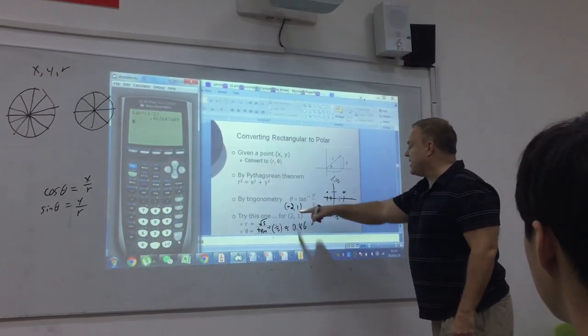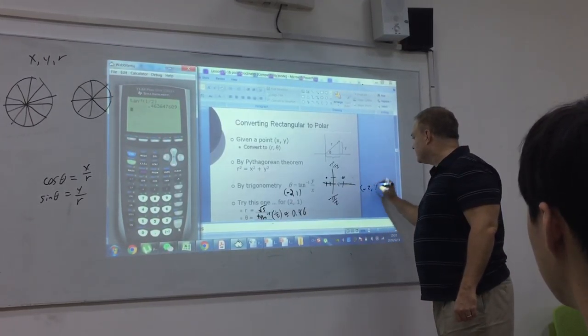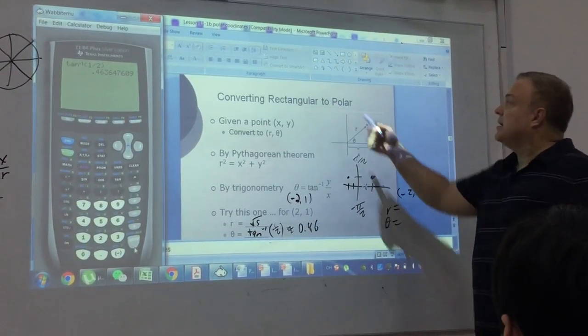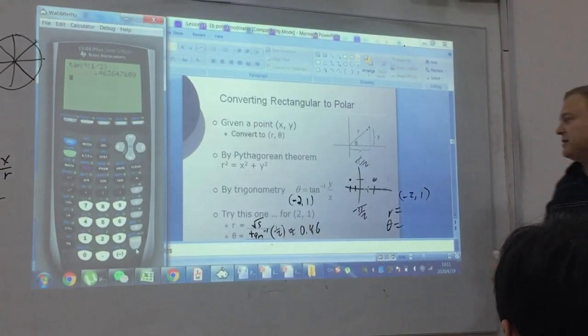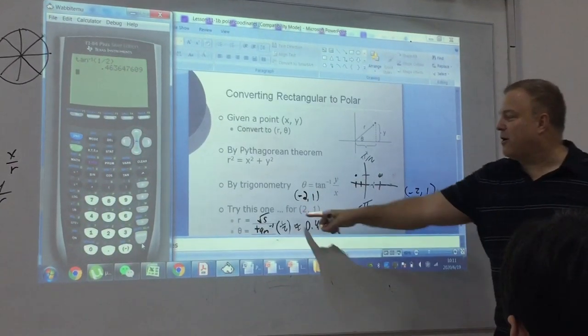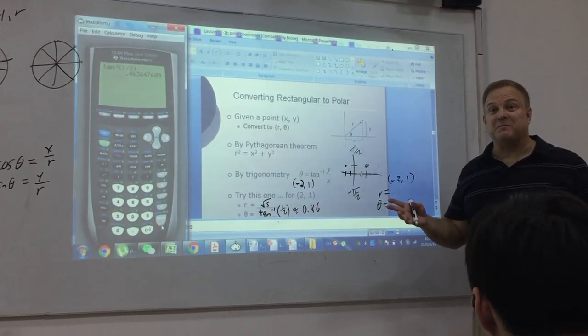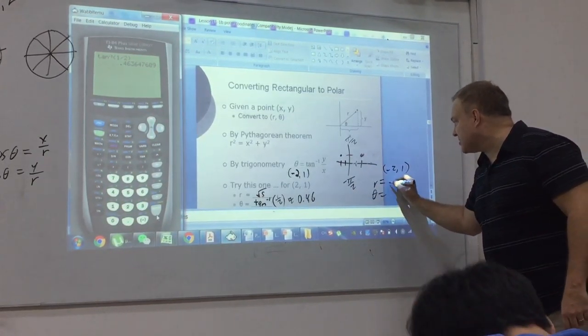For right now, if we have the point (-2, 1) and we want to write this in polar form, then obviously we need r and θ. Now r, that's easy. Before we had (2, 1), now we have (-2, 1). Does everybody see why r is the same? Because you're going to square both the x and the y. So that's the same.